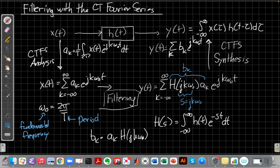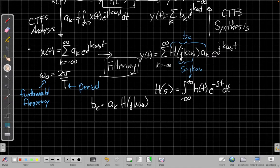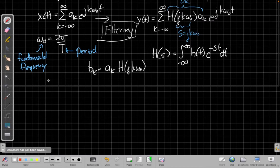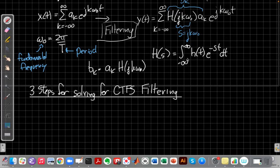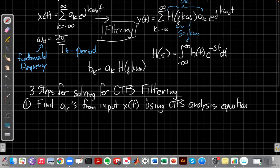So if we sort of pull this all together into three steps. There are three steps for solving for continuous time Fourier series filtering. The first one is to find, use the Fourier series analysis equation to find the a_k's. And this is the process of getting from time to frequency representation. The a_k's essentially represent the recipe in the frequency domain. We practiced that a lot last week with that integral.